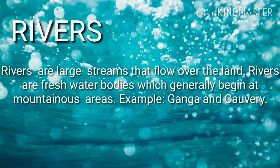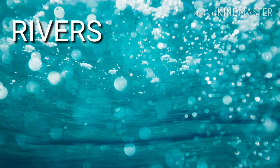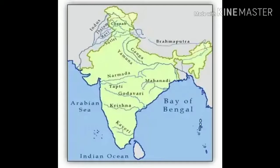Rivers: Rivers are large streams that flow over the land. They are fresh water bodies which generally begin at mountainous areas. For example, the Ganga and Kaveri. The map shown here highlights the rivers of India.